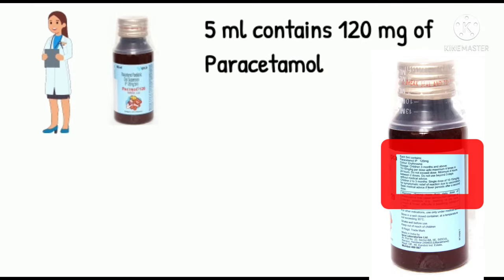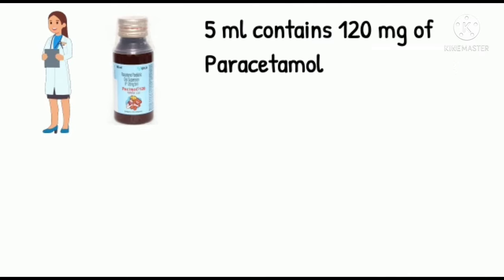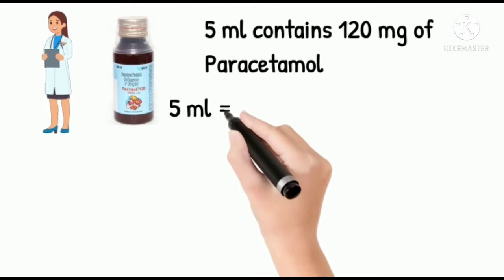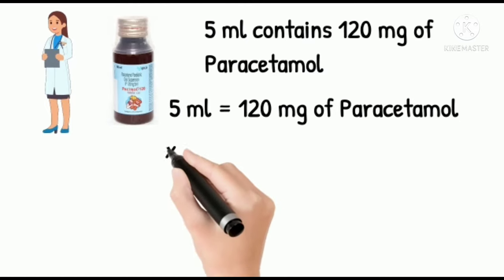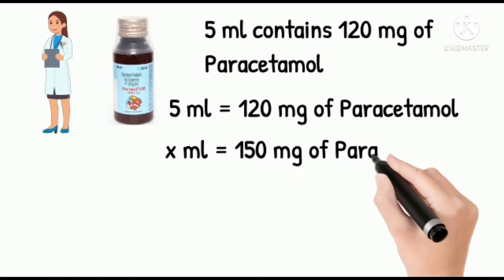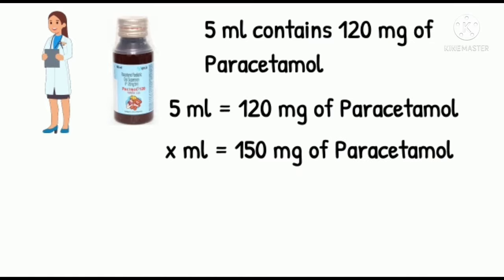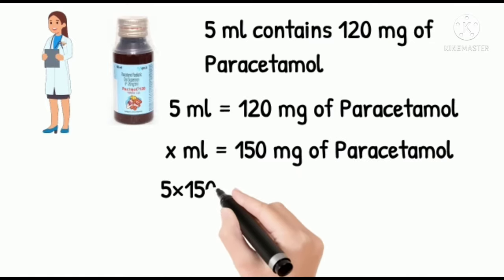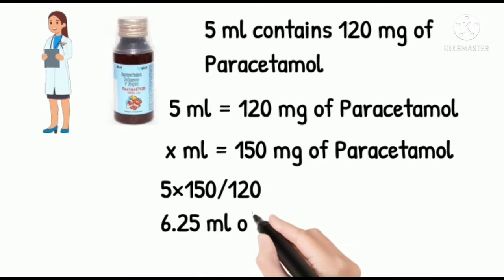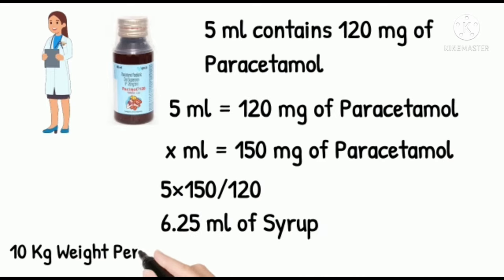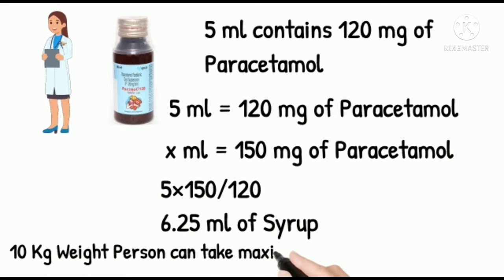Generally in P120 syrup, the back side of the label clearly mentions how much ml contains how many milligrams of paracetamol. In P120 syrup, 5 ml of syrup contains 120 milligrams of paracetamol. So 5 ml equals 120 mg. For 150 milligrams, 5 by x equals 120 by 150, that is approximately 6.25 ml of paracetamol syrup should be given.